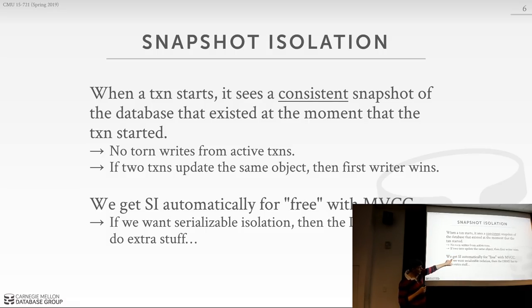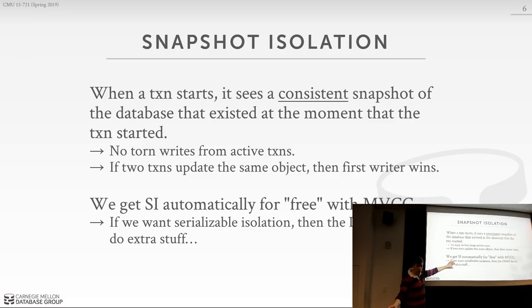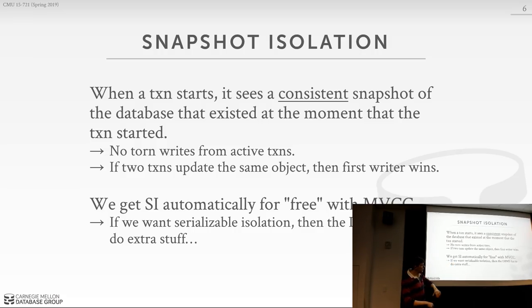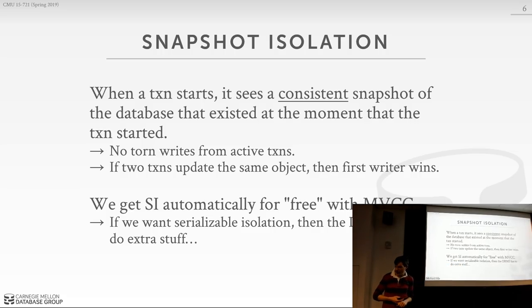If you want serializable isolation — to avoid phantoms or the write skew anomaly — you have to do some extra stuff beyond standard MVCC. For this lecture and the paper you read, we're not doing that extra stuff except for the certifier. Next class we'll see how to add back that extra stuff to get serializable isolation.